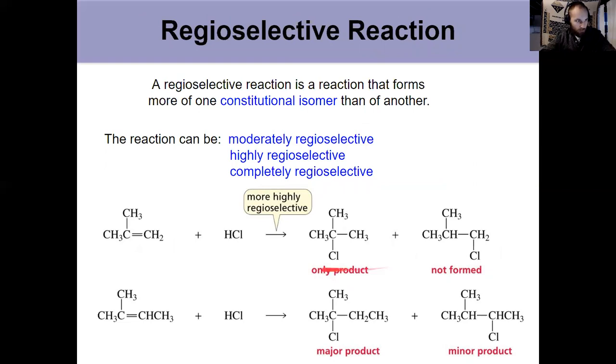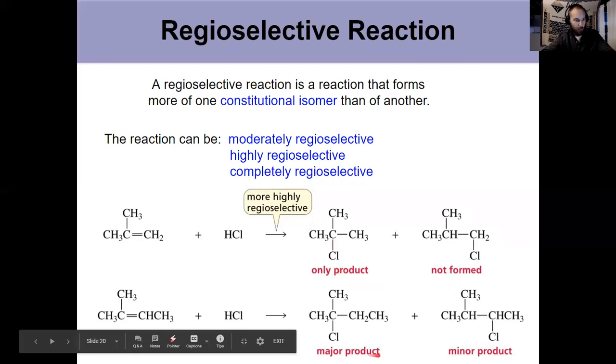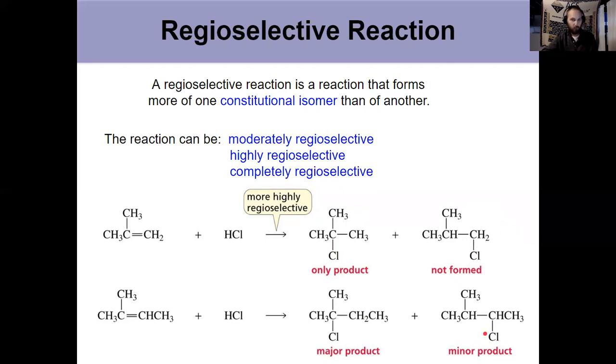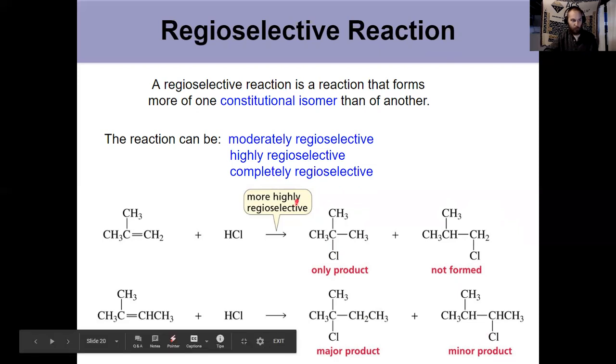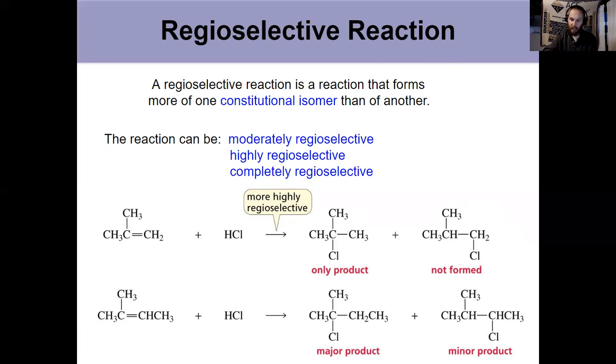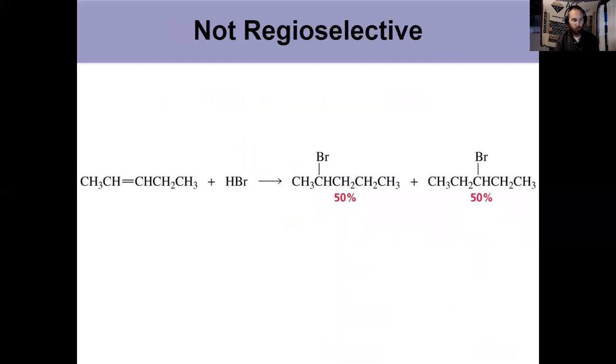So here's an example of something that's completely regioselective, where only one product is formed. Here's something that's moderately or highly regioselective. If you get a major and a minor, something that's like 90-10 would be highly regioselective. 60-40 would be moderately regioselective. We're really focusing to start on things that are completely regioselective. We only make one product. And again, we're looking at difference in stability of the carbocations because the Hammond postulate from video one told us that this relates to the stability of the transition state. What's formed faster predominates. But that's not to say that that's always going to be the case moving forward.